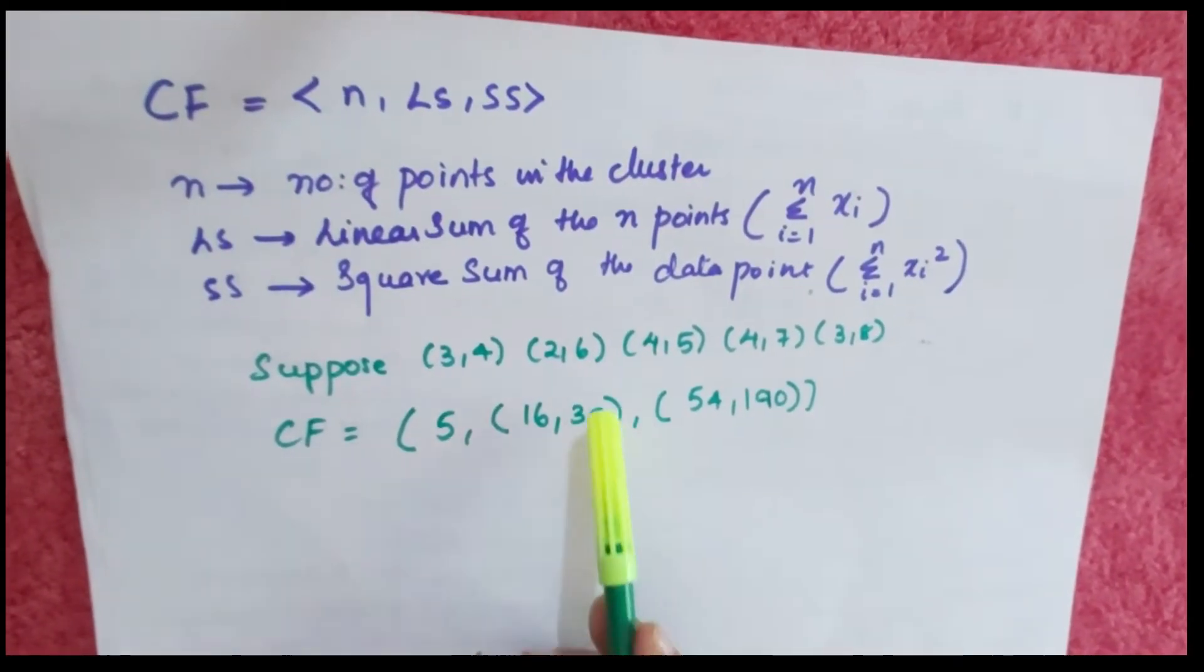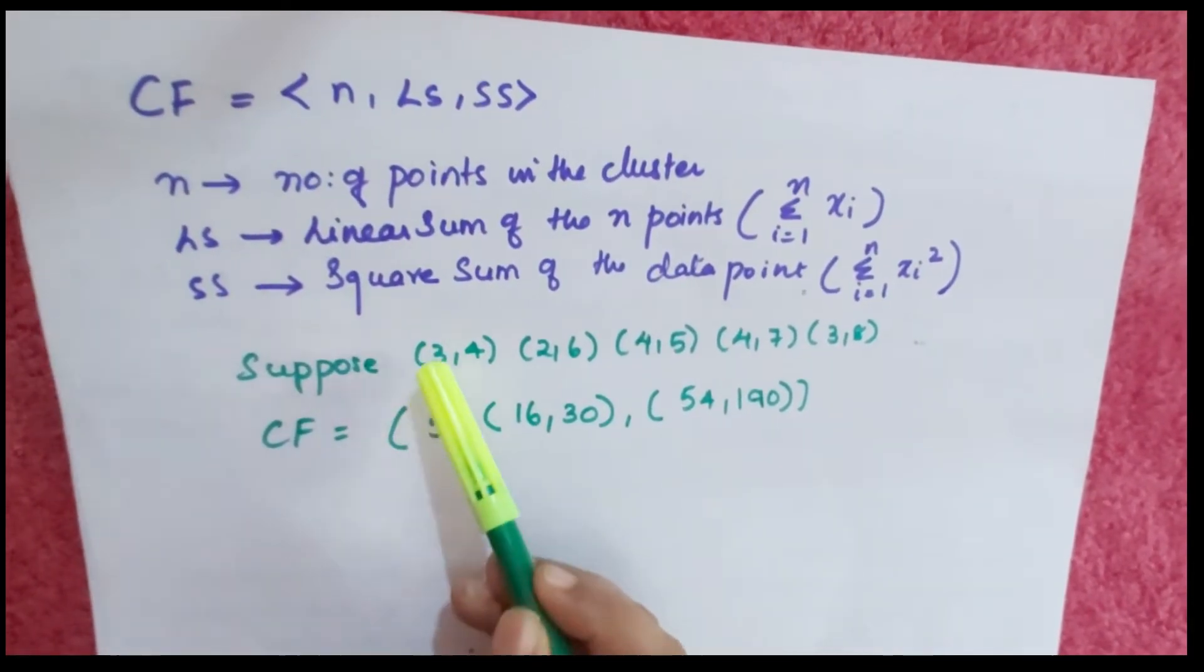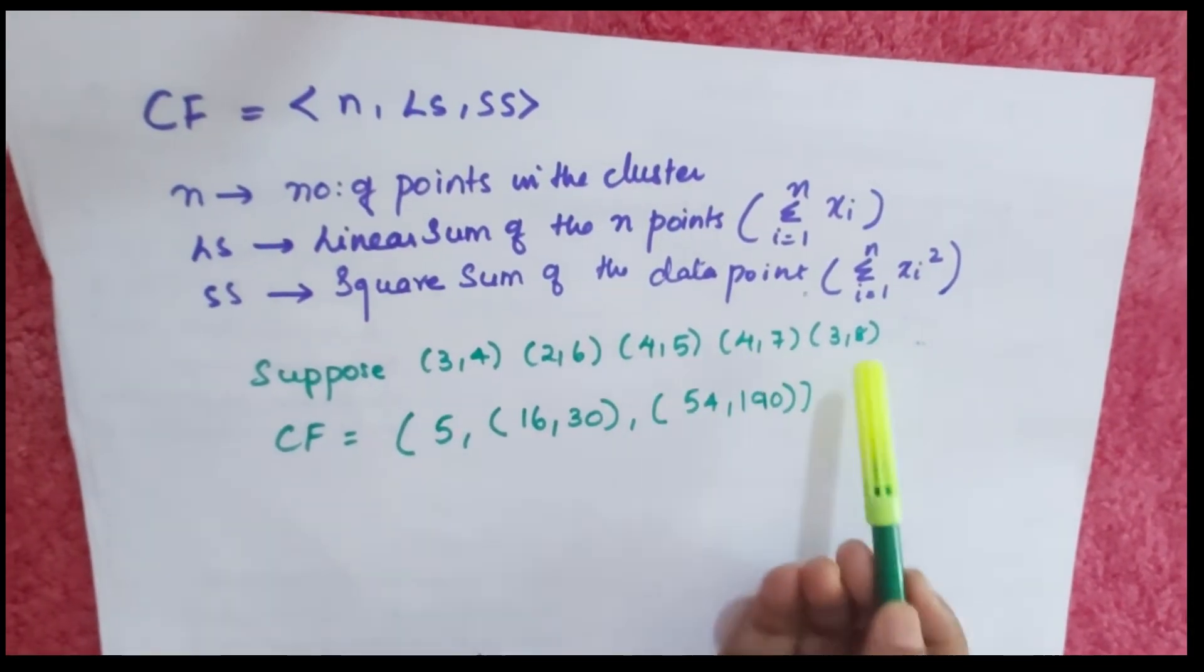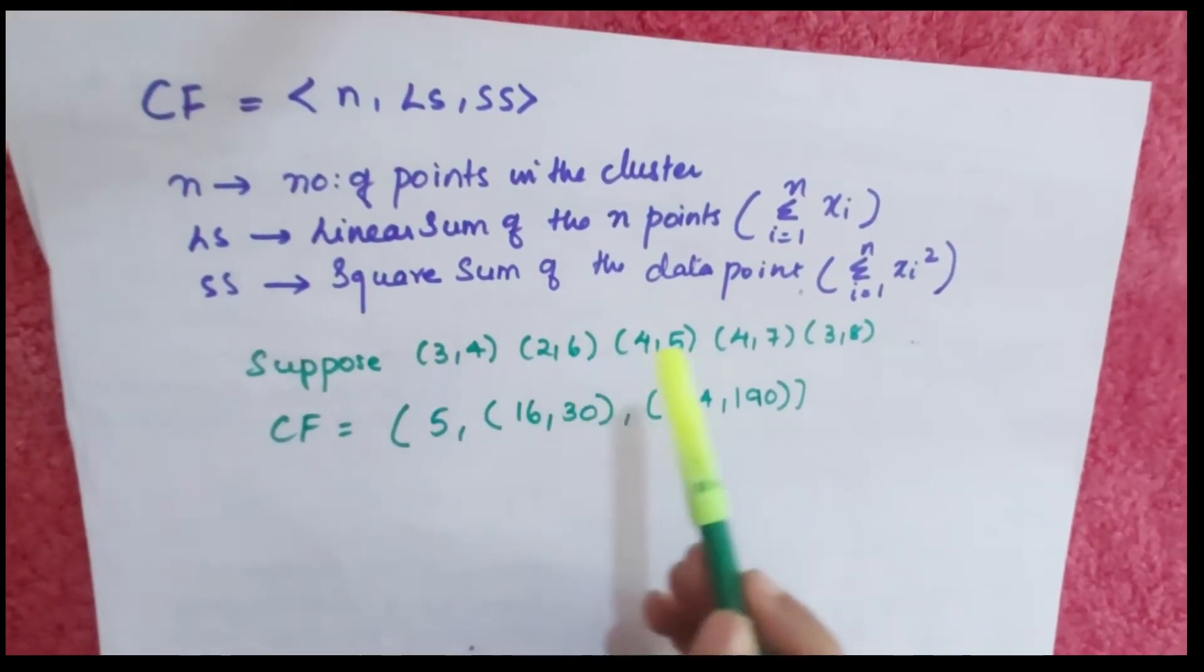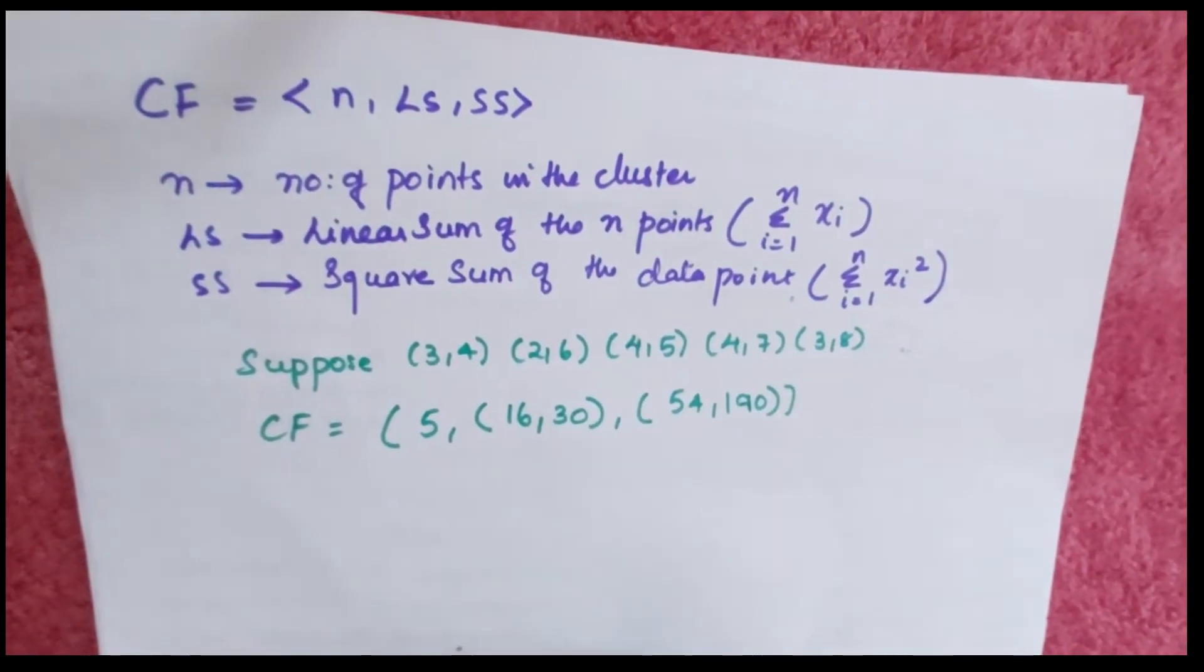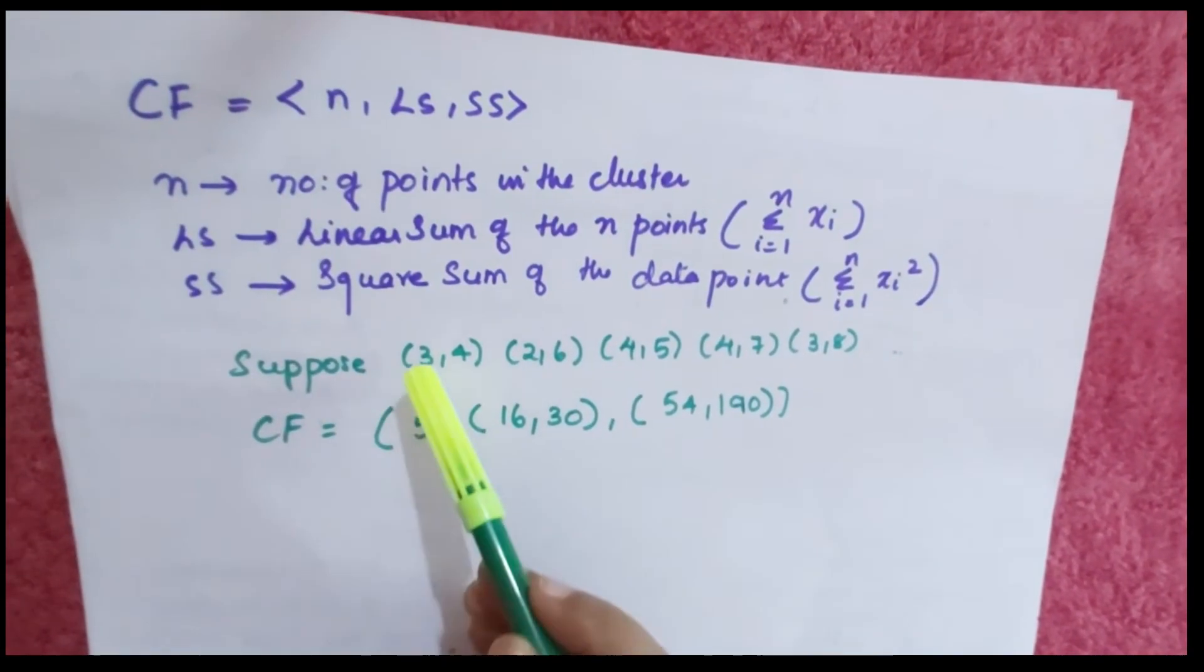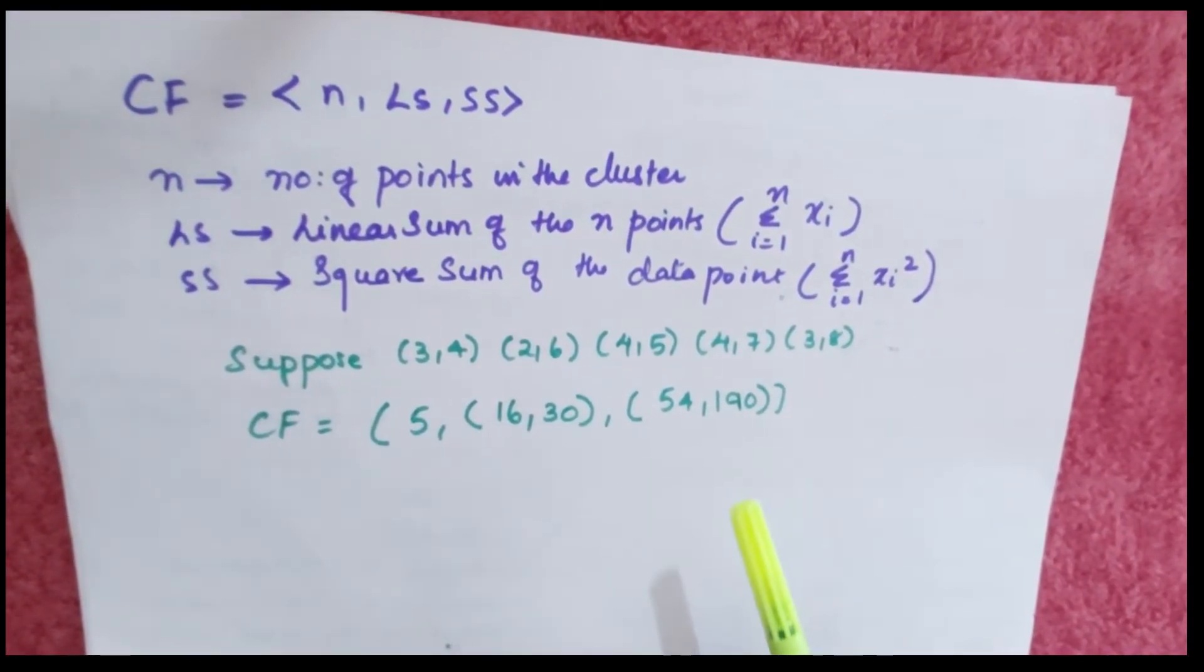What will be LS? LS will be the sum of 3, 2, 4, 4, 3, which is 16, and this part will be 4, 6, 5, 7, 8, which is 30. Next is the square sum of the points: 54, 190.